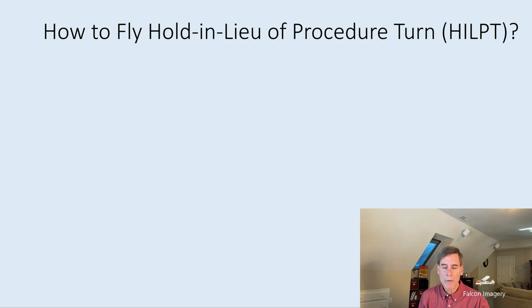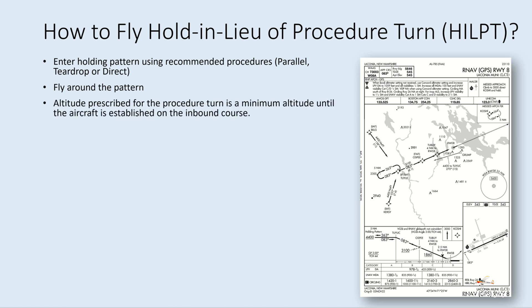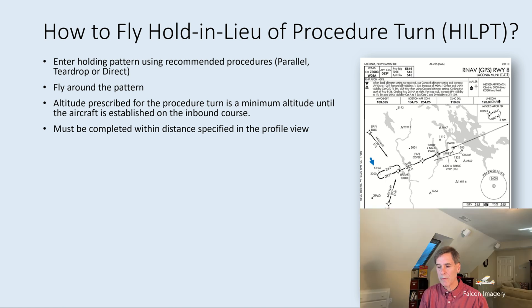So how do we fly the hold in lieu of procedure turn? Enter the holding pattern using the recommended procedures — a parallel entry, teardrop, or direct entry — whatever is appropriate based on your heading. Fly around the pattern. The altitude prescribed is a minimum altitude until the aircraft is established inbound on the course, so maintain whatever altitude ATC assigned or the minimum specified on the approach plate. Must be completed within the distance specified in the profile — here, five nautical miles. You could go shorter, but no further.